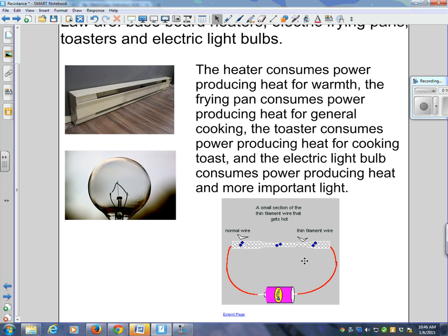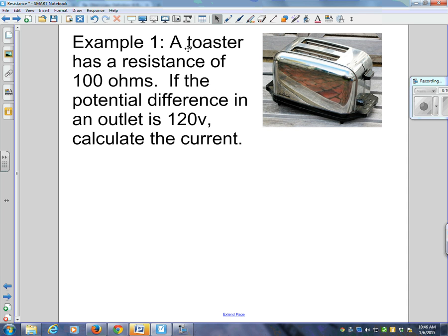Let's look at example number one. A toaster has a resistance of 100 ohms. If you go home tonight and look at your toaster, you flip it upside down and you'll put crumbs all over the floor and they'll yell at you. But you can say this is for science because I need to know what the resistance of the toaster is. If the potential difference in an outlet is 120 volts, and everyone's house is, then you calculate the current.